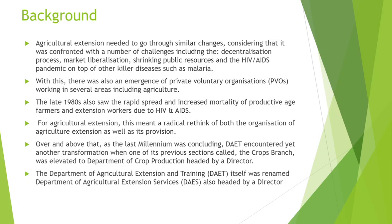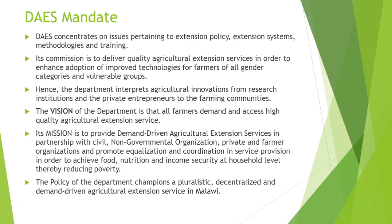For agricultural extension, this meant a radical rethink of both the organization of agricultural extension as well as its provision. As the last millennium was concluding, the Department of Agricultural Extension and Training encountered yet another transformation when one of its previous sections, called the Crops Branch, was elevated to Department of Crop Production, headed by a director. The Department of Agricultural Extension and Training was renamed the Department of Agricultural Extension Services, also headed by a director. The Department concentrates on issues pertaining to extension policy, extension systems, methodologies, and training.